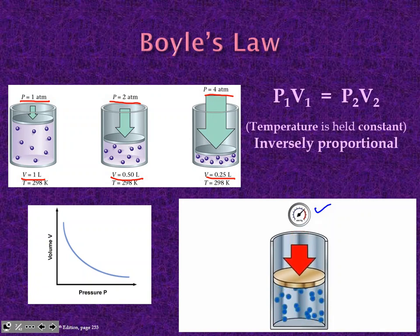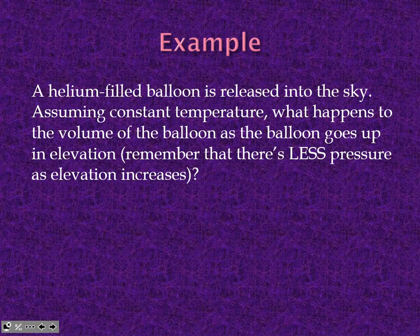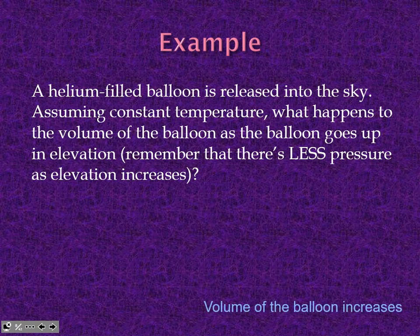If you can remember that pressure and volume are inverse and know everything else, all the other ones will follow a nice direct relationship. For example, a helium-filled balloon is released into the sky, assuming constant temperature. As you go up in the atmosphere, the atmospheric pressure gets less, so the balloon is going to get bigger — the volume will expand and increase.